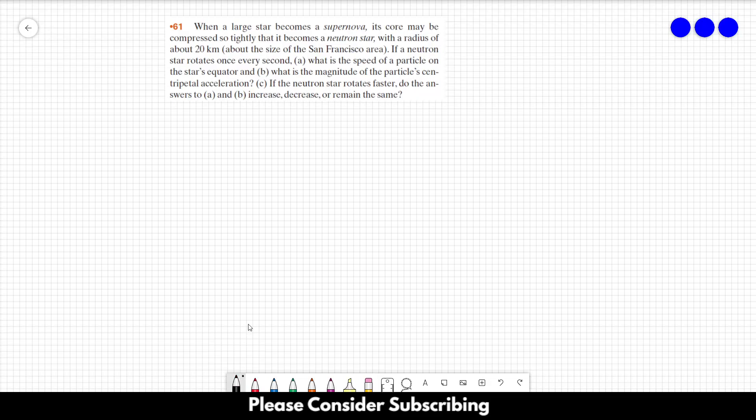Number 61. When a large star becomes a supernova, its core may be compressed so tightly that it becomes a neutron star, with a radius of about 20 kilometers, about the size of the San Francisco area. If a neutron star rotates once every second, letter A, what is the speed of a particle on the star's equator?